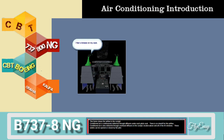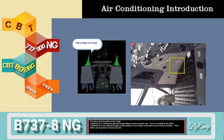This picture shows the airflow to the cockpit. Conditioned air is continuously delivered through diffusers under each pilot's seat, with no shut-off for this airflow. Conditioned air is also delivered through overhead diffusers in the cockpit, located above and aft of the number 3 windows. These outlets can be opened and closed by the pilot.